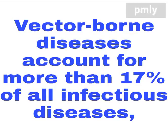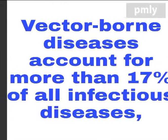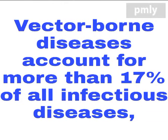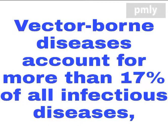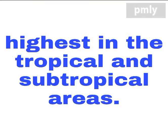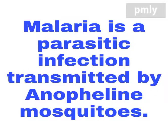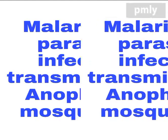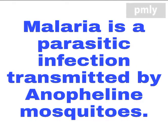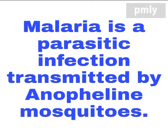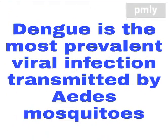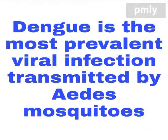Vector-borne diseases account for more than 17% of all infectious diseases, highest in the tropical and subtropical areas. Malaria is a parasitic infection transmitted by anopheline mosquitoes. Dengue is the most prevalent viral infection transmitted by Aedes aegypti mosquitoes.